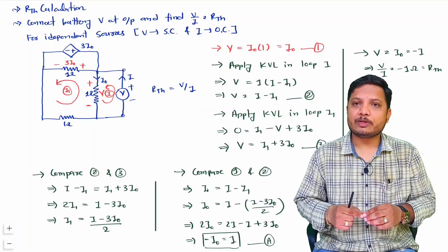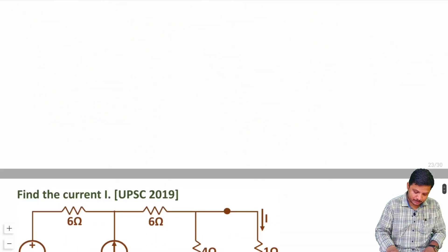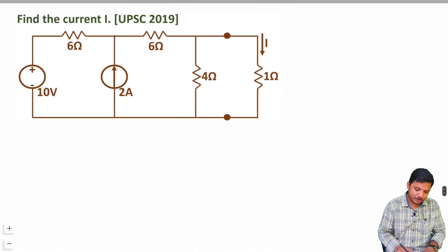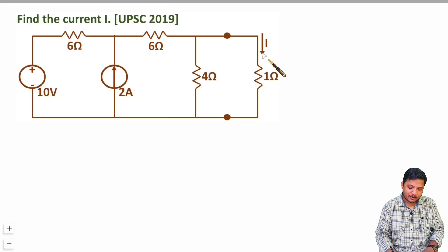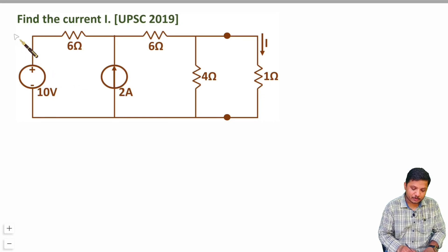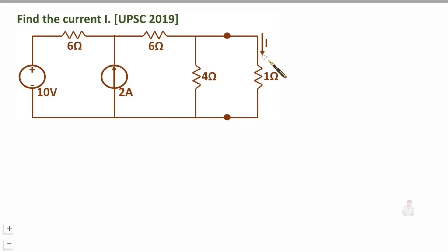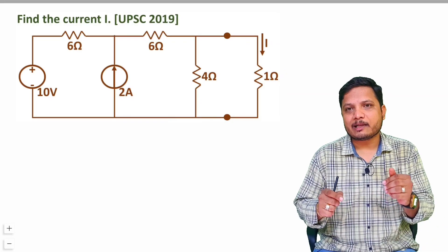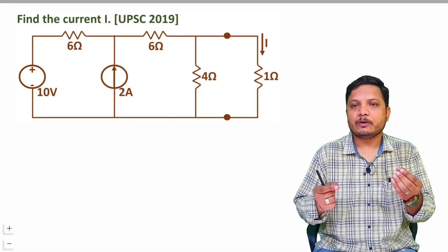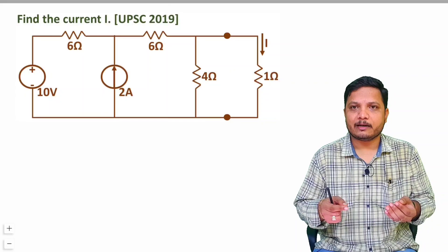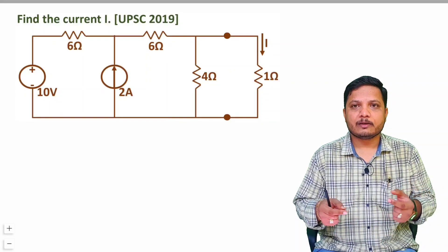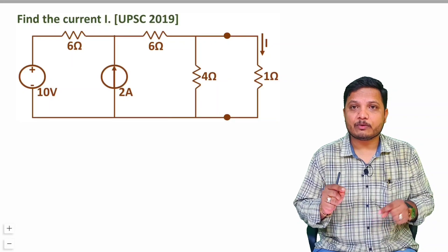Let me give you one more practice question — write your answer in the comment box. In this circuit you need to find current I. You could use KVL or KCL, but I want you to find the Thevenin's equivalent of the network first — calculate RTH and VTH — and then from that you can easily calculate current I. This practice will help you build skills in VTH and RTH calculation. Write your answer in the comment box. Thank you so much for watching this video.